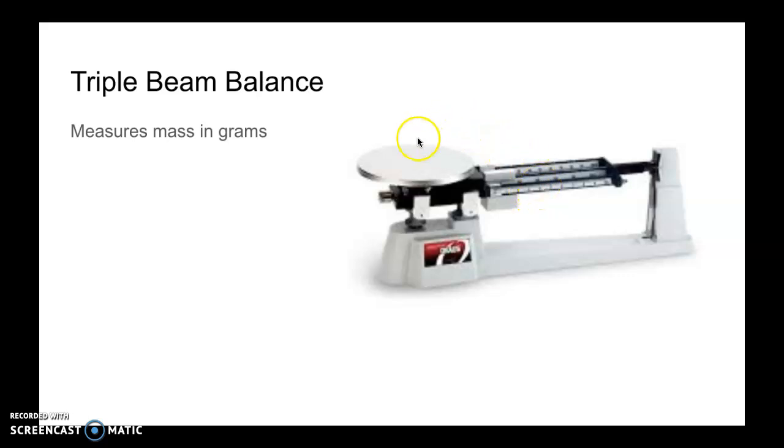You would put the object that you're trying to mass over here on this pan. As you slide these weights your goal is to get this pointer to line up with the white line. When it is lined up we would say it's balanced. You would add the numbers on these beams and that would give you the mass of your object. The unit of measure is grams. In science we only use the metric system.